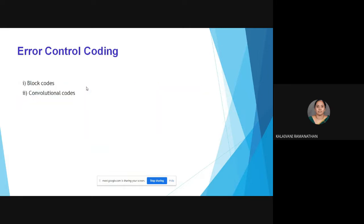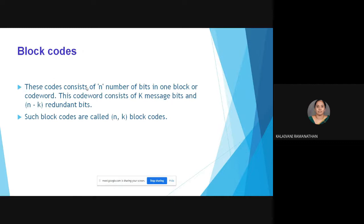Error control coding can be classified into two types: block codes and convolutional codes. Block codes consist of n number of bits in one block or code word. This code word consists of k message bits and n minus k redundant bits, also called check bits or parity bits. Such codes are called (n, k) block codes, where n represents the total number of bits in one code word and k represents the message bits.